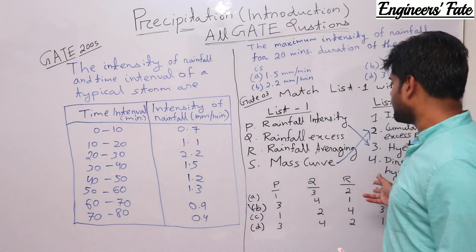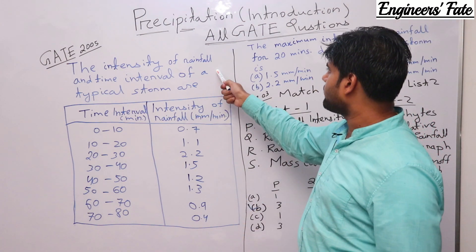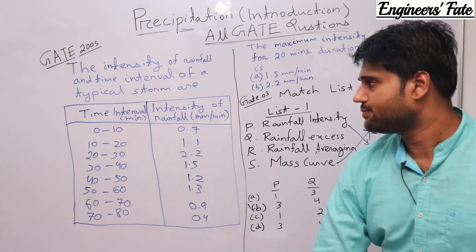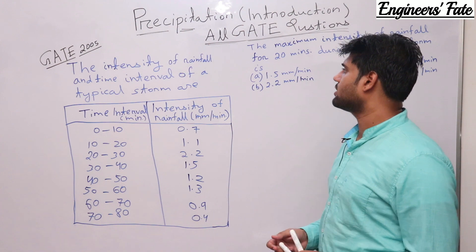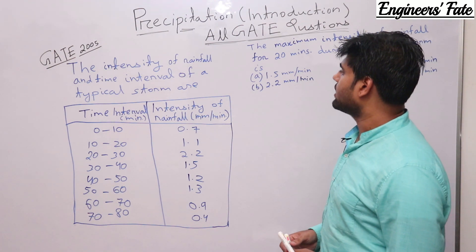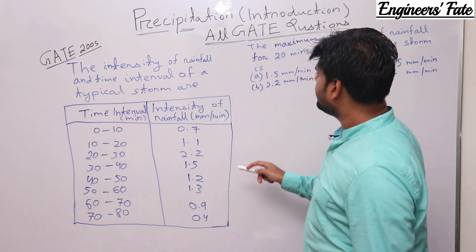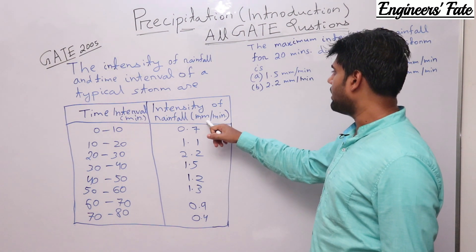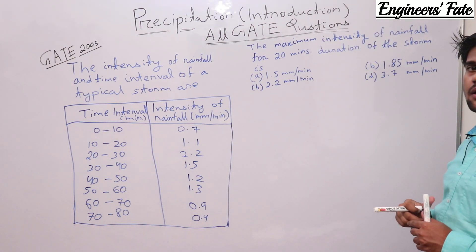Next, let's solve the question asked in GATE 2005. This question gives the intensity of rainfall and time interval of a tropical storm. The time interval is given in a column where each interval is 10 minutes, and the intensity of rainfall is also given in a column in units of mm per minute. The question asks for the maximum intensity of rainfall for a 20-minute duration.